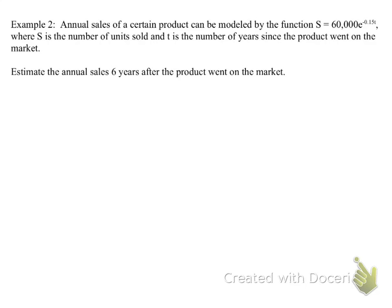So for this first example, annual sales of a certain product can be modeled by this function, where S is the number of units sold and t is the number of years since the product went on the market. Estimate the annual sales six years after the product went on the market. It's a matter of being able to use this formula. So S = 60,000e^(-0.15t), and we're going to plug in 6 for the t.